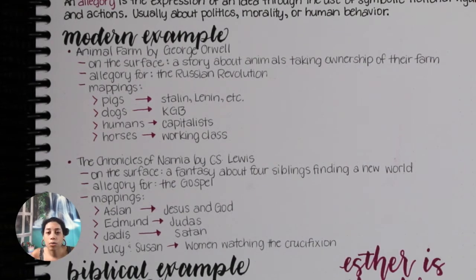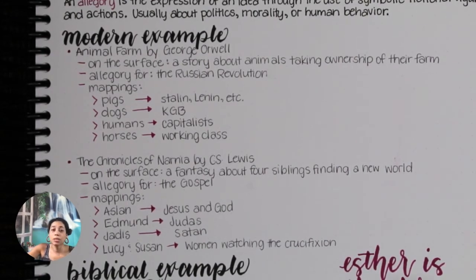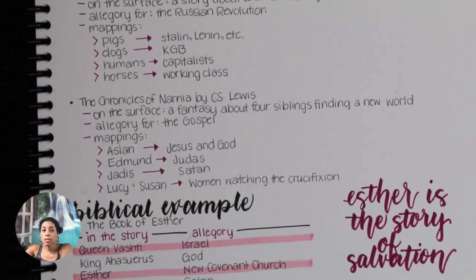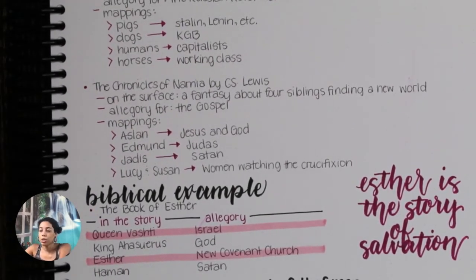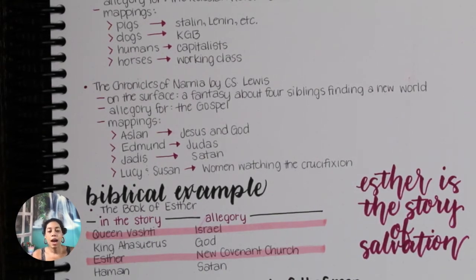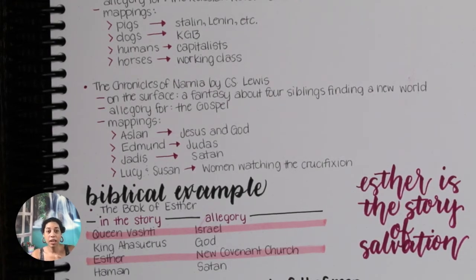So now let's talk about allegory in the Bible, because that's the whole point. As you can see I have the word Esther here, so you know we're going into Esther. The example that I love to use is the book of Esther. It's one of my all-time favorite books, and it's interesting because a lot of people argue it shouldn't actually be in the Bible because it's the only book in the Bible that doesn't mention God by name — it never says anything about God specifically.